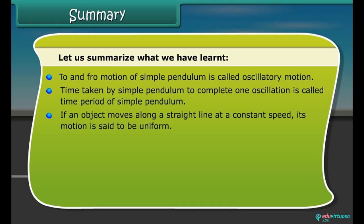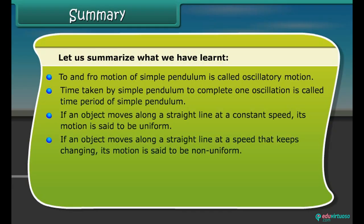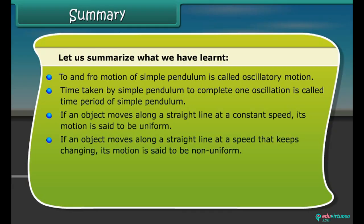If an object moves along a straight line at a constant speed, its motion is said to be uniform. If an object moves along a straight line at a speed that keeps changing, its motion is said to be non-uniform.